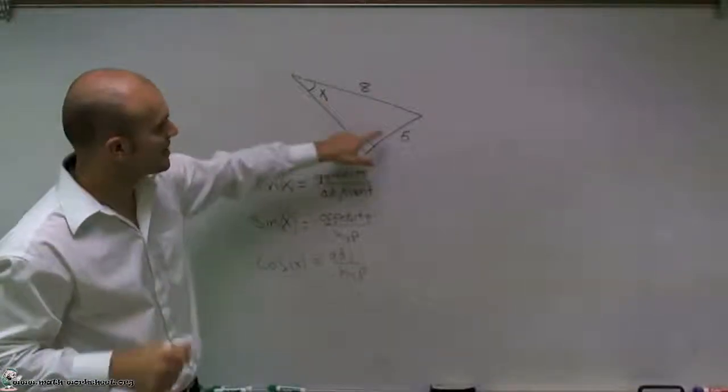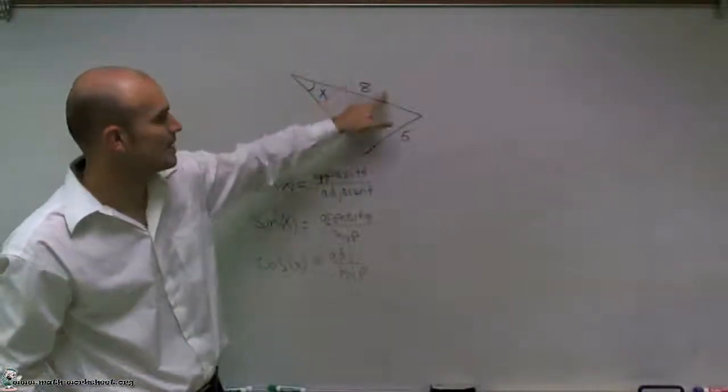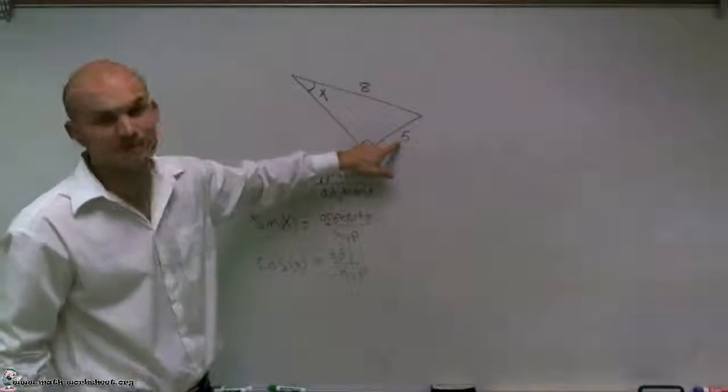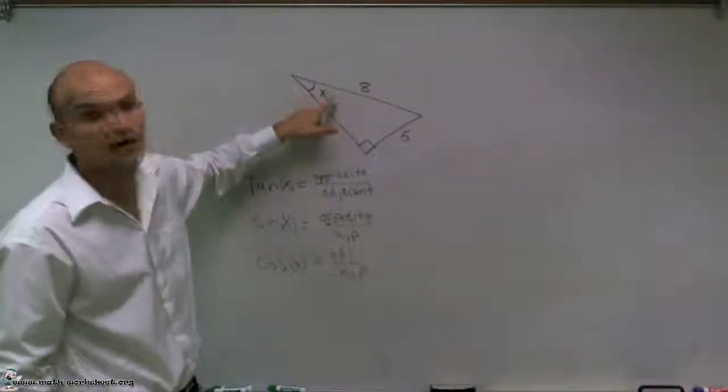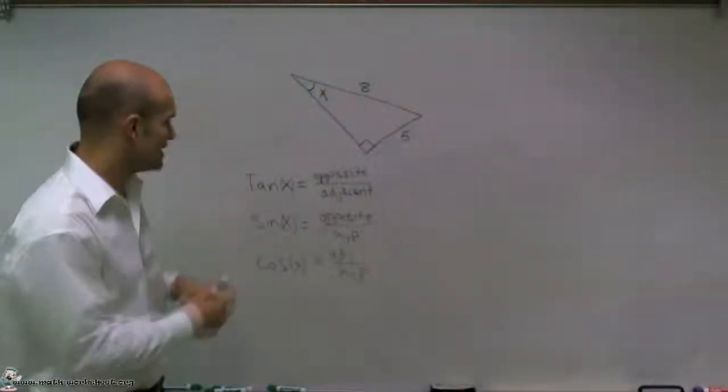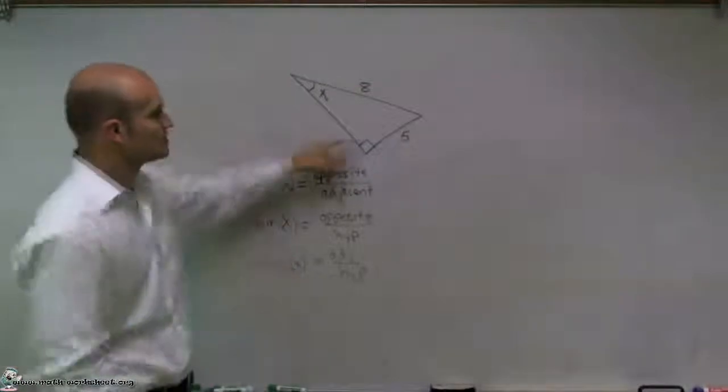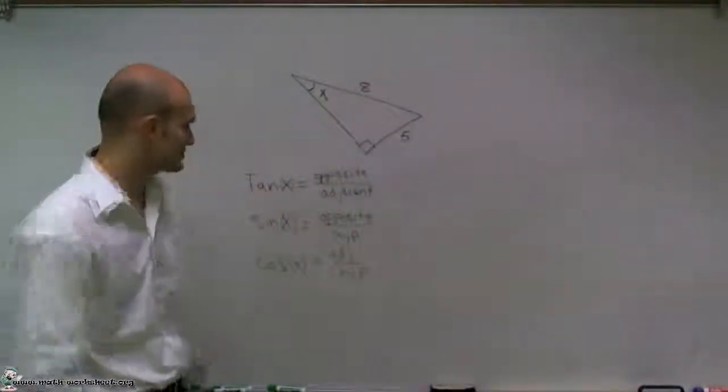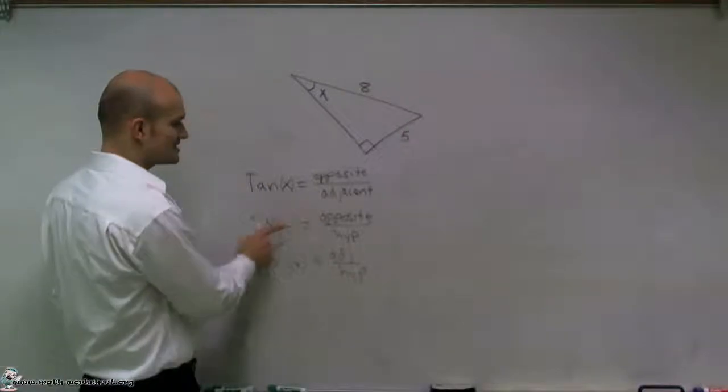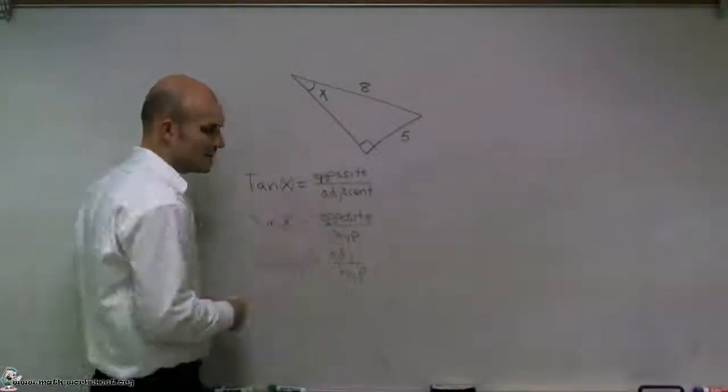So what we can see is I have my hypotenuse is 8, and then what I have is my opposite side because it's directly across from my angle x. So I need to look at which trig function deals with my opposite and my hypotenuse.